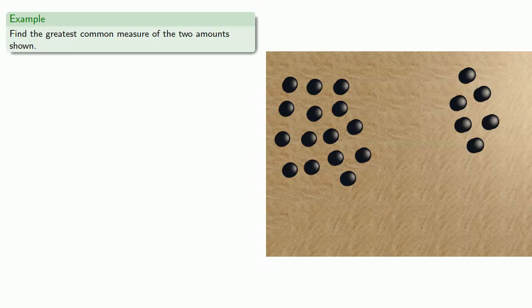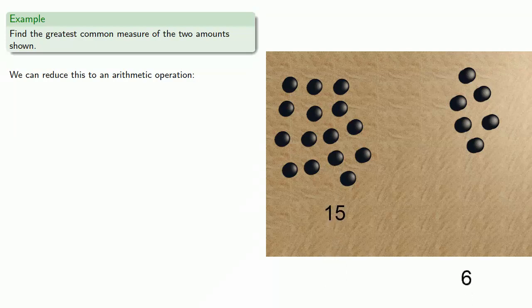There's some evidence that this is how the Pythagoreans actually looked at the Euclidean algorithm — they saw it as a tangible operation performed on objects, and not as a written operation performed on numbers. But we can reduce this to an arithmetic operation. So here we see we have the number 15 and another number, the number 6.